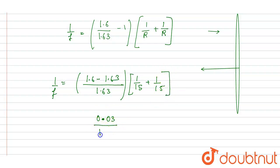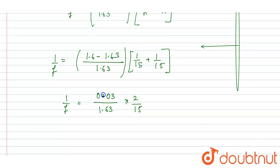And in denominator we will write this, and 1 by 15 plus 1 by 15, it is 2 by 15, and it will be equals to 1 by f.